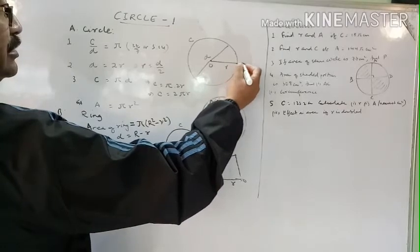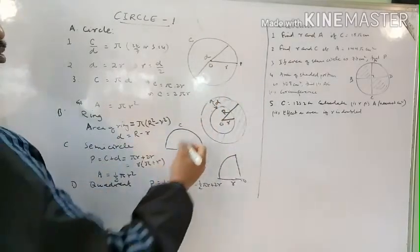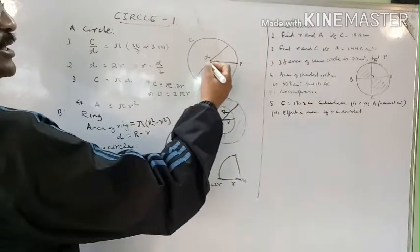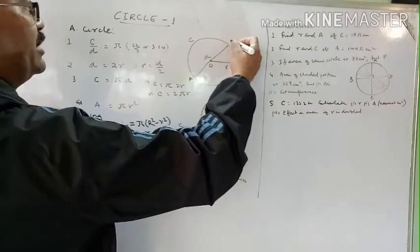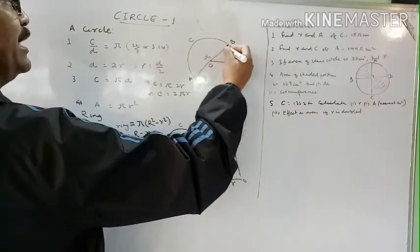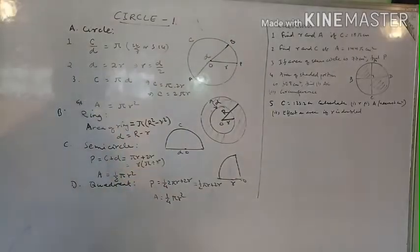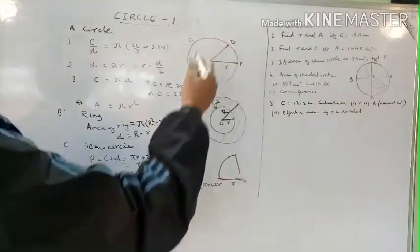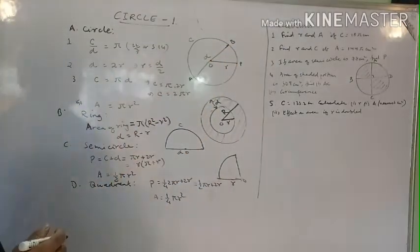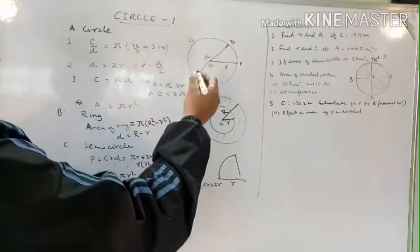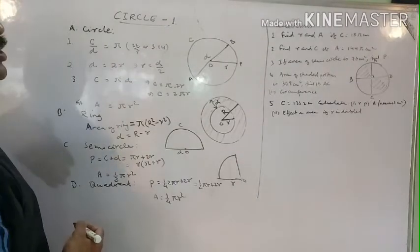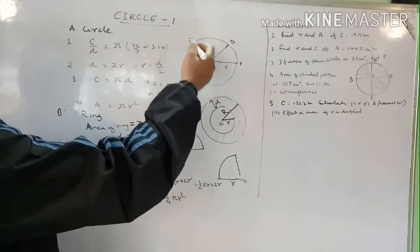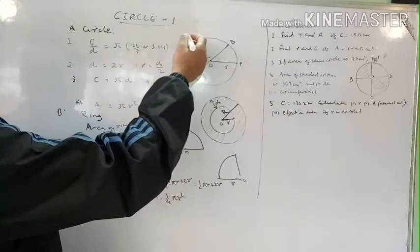The distance between the center and any point on the circumference is called the radius. If a line AB passes through the center O, then the length AB is called the diameter. So diameter is the distance between any two points of the circle passing through the center. C stands for circumference — it is the length of the boundary.